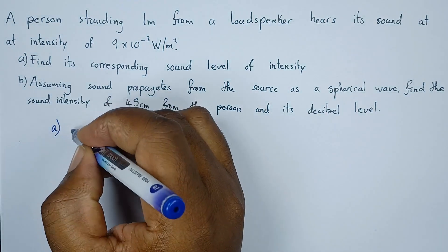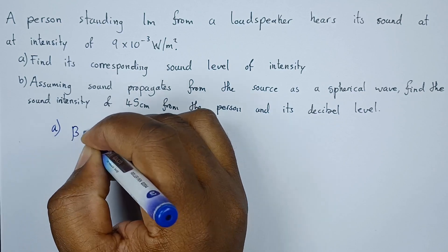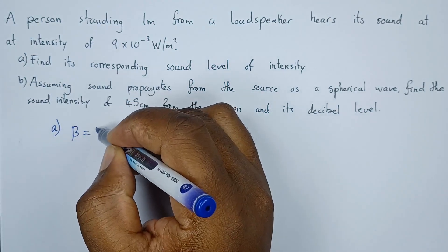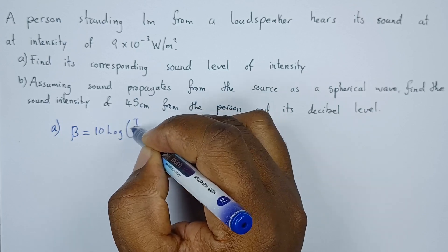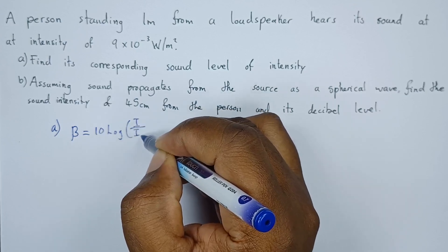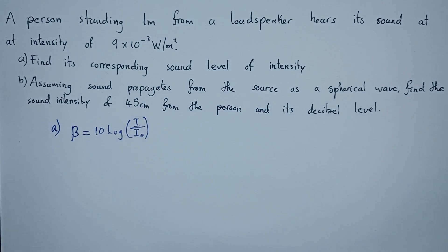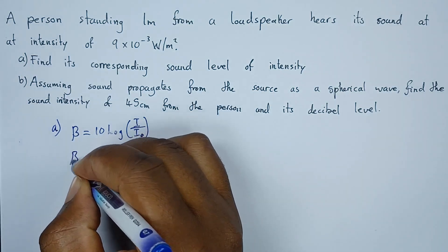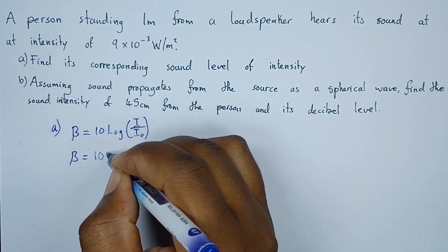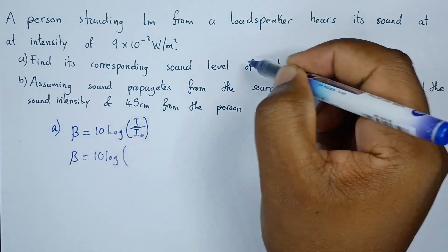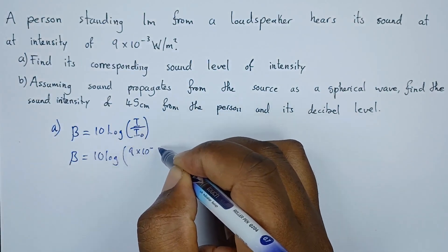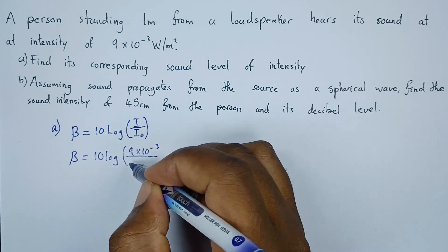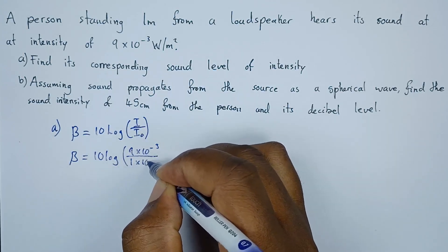To find the level of intensity, beta, which represents the level of intensity, is equal to 10 times the logarithm of the intensity over the threshold of intensity. The threshold of intensity is a standard value, so beta equals 10 log of the intensity — which is 9 times 10 to the power negative 3 — over the threshold of intensity, which is 1 times 10 to the power negative 12.